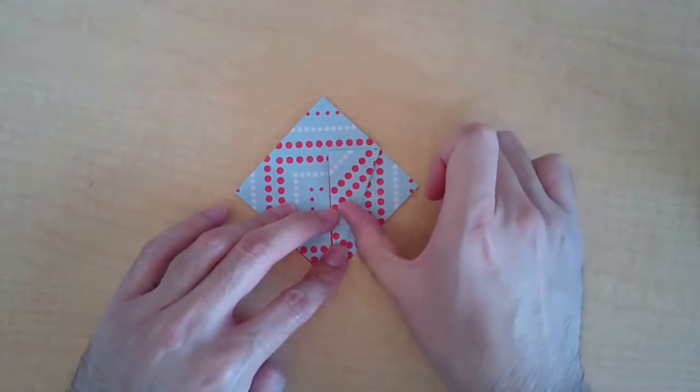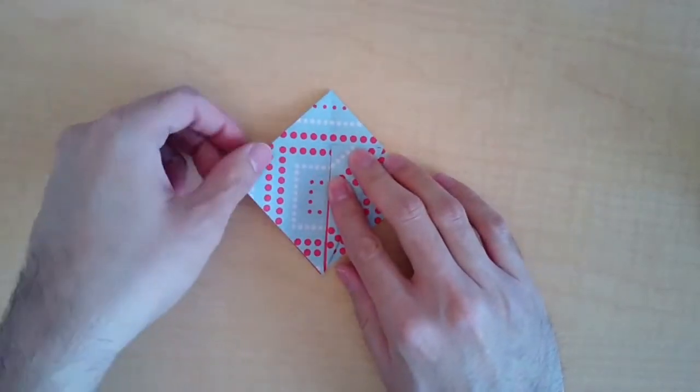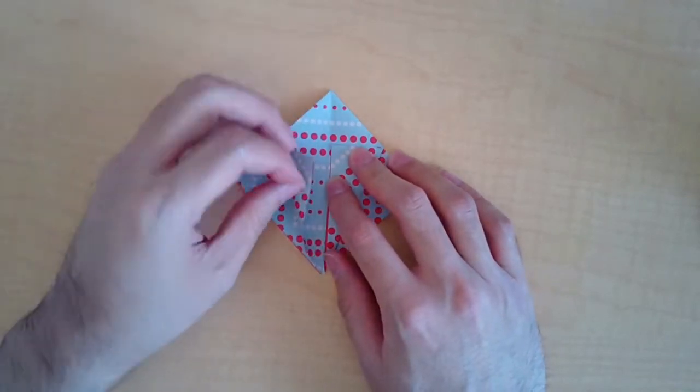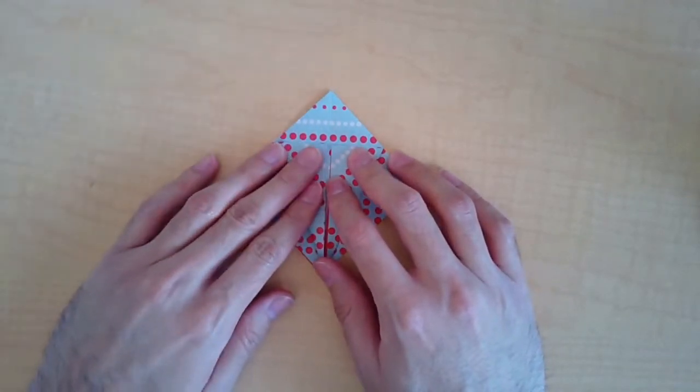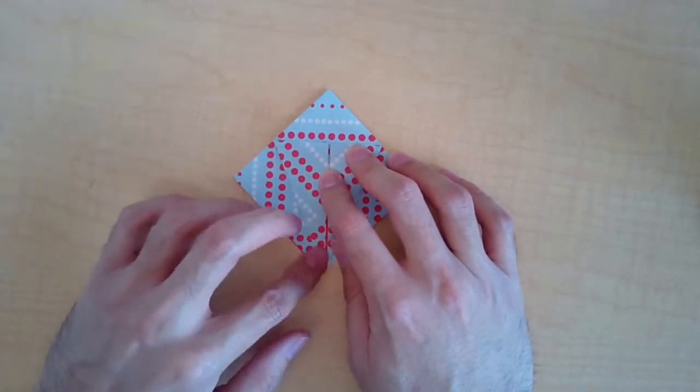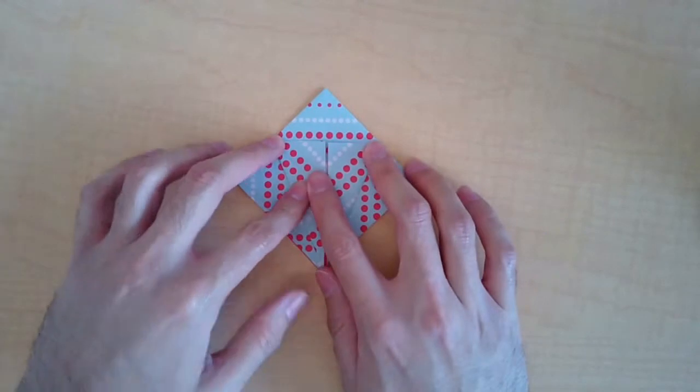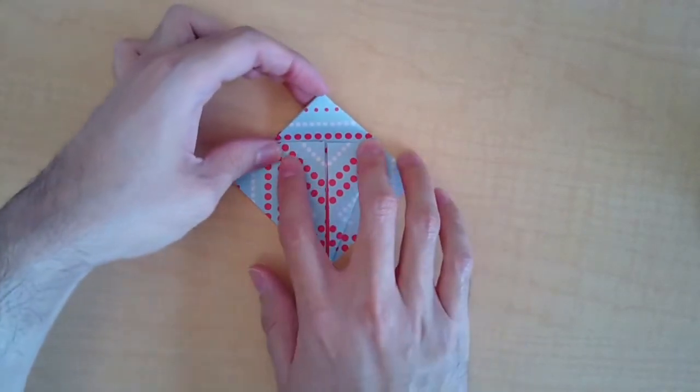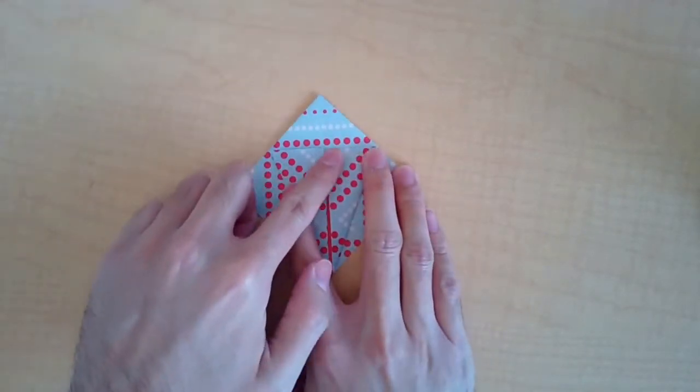On the other side you can do the same thing - pull it down to the middle. Now you're going to grab the top part and then fold it along this line here.